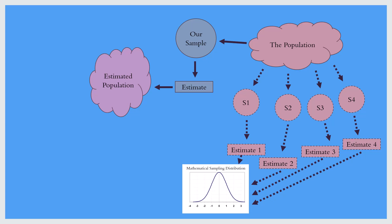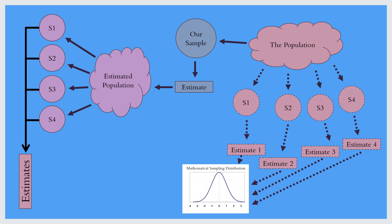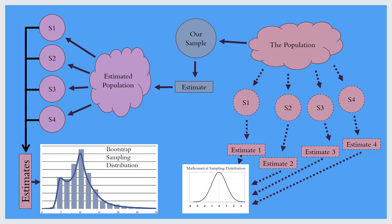Now that we have estimated the population, we draw multiple samples from that population. This time the arrows are solid — we are actually doing this. We're drawing sample after sample after sample. That's different from normal parametric statistics, in which we simply mathematically conceive of drawing samples. Here we're really doing it, utilizing the Monte Carlo method to draw multiple samples. We then estimate a statistic from each of these samples and use those estimates to form our empirical sampling distribution, what we may call a bootstrap sampling distribution.